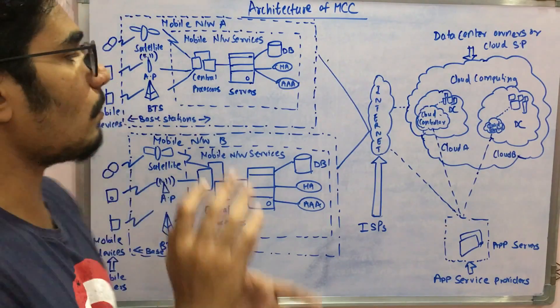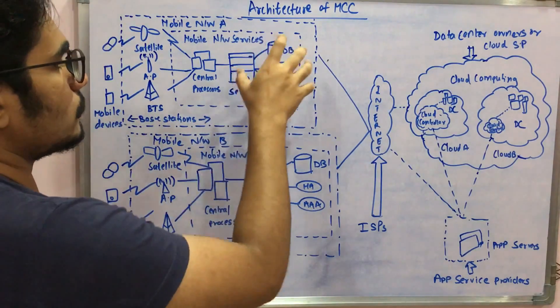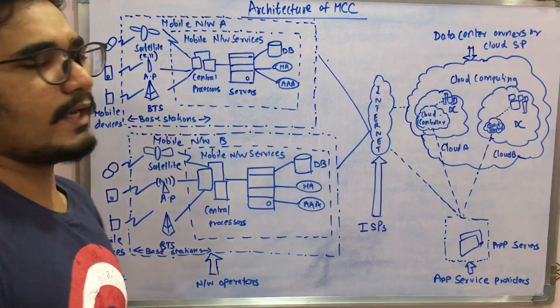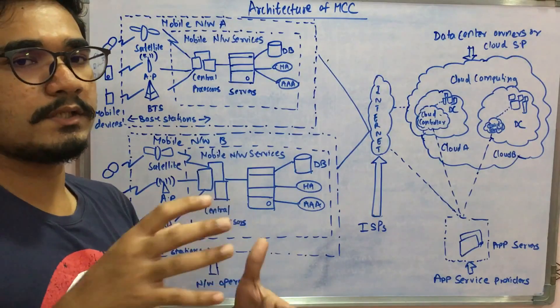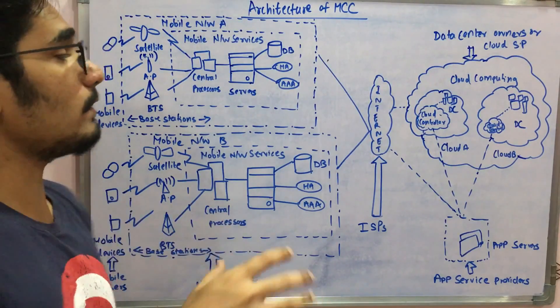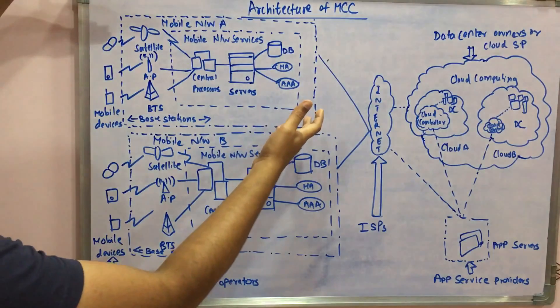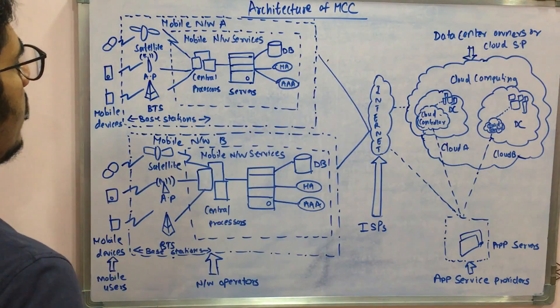All those IP details are stored at the home agent. Then we have the AAA - we saw this AAA model that provides the authentication, authorization, and accounting of the cloud resources which is utilized over this network. This gives rise to an entire mobile network A.